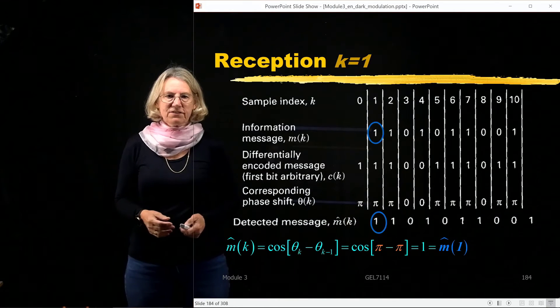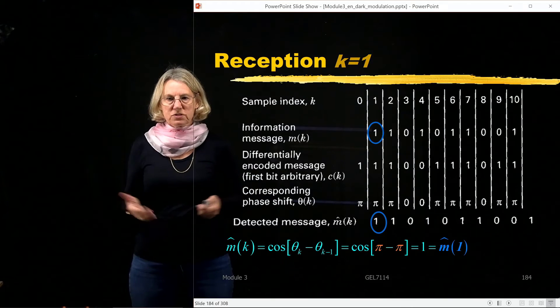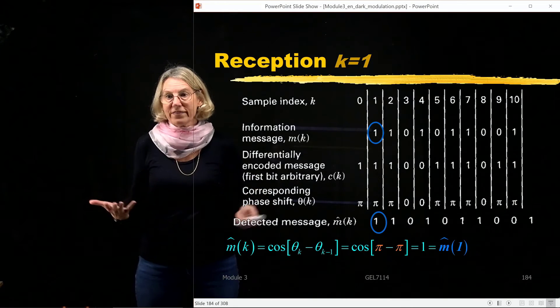this was what was transmitted, a pi and a pi, and the difference between them is 0, which gives a cosine of 1, and indeed it was a 1 that was transmitted.